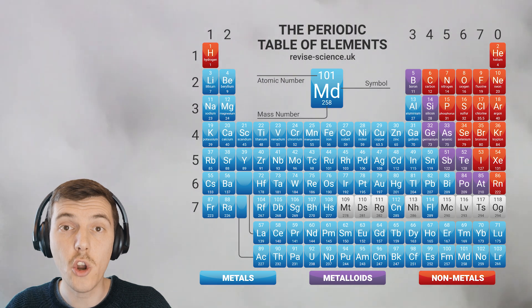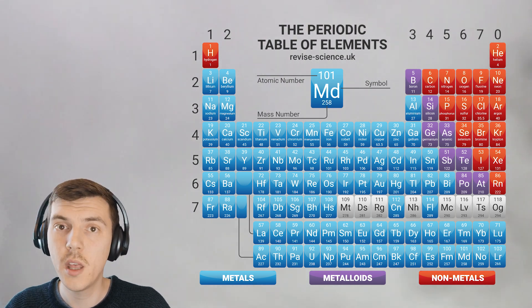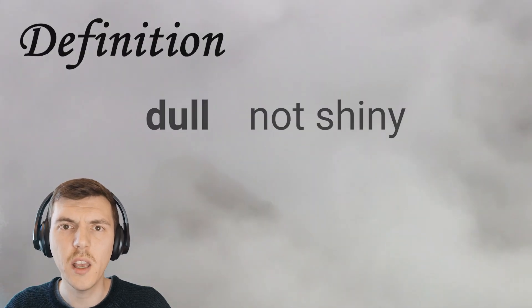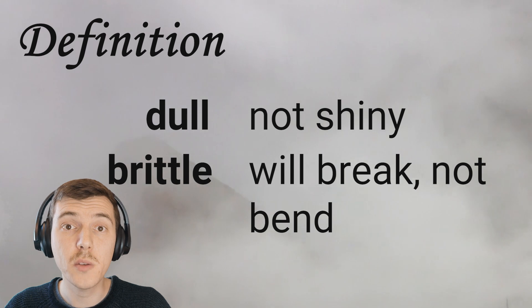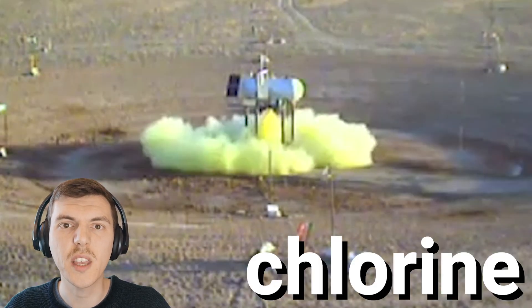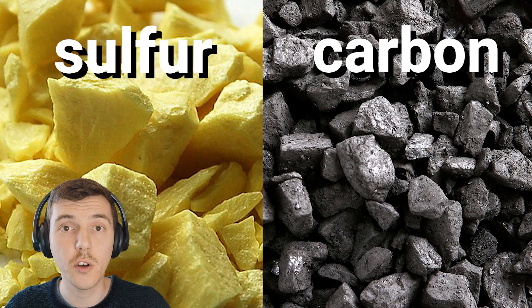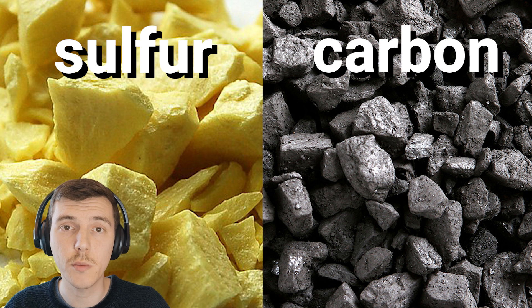The rest of the elements are non-metals, and we find them on the right-hand side of the periodic table. They don't have the same kinds of properties as metals, and they tend to be quite dull and brittle, and we find them in mostly the gas state at room temperature. Non-metal elements that have these properties include things like chlorine and oxygen. Some non-metals, like sulfur and carbon, are actually solids at room temperature, but the rest of their properties are very similar to the other non-metals.